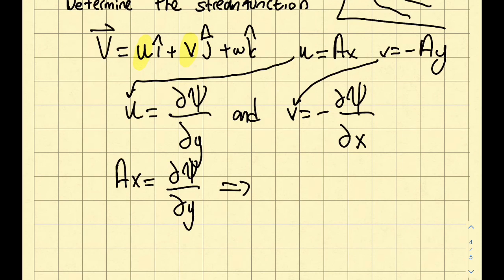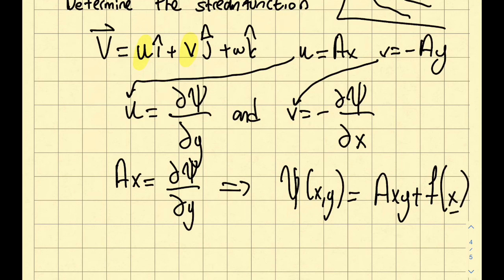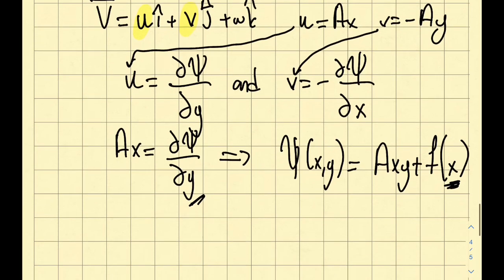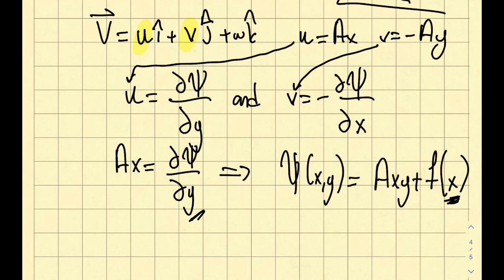And I got myself a stream function of X, Y. It's not a function of T, it's given in the question statement. It's equal to AXY plus, remember this is a partial, another derivative, so I'm going to get myself an F of X, right? I got myself X because I accounted for Y variance of the stream function in the relationship as well. So let's take a minute over here and take a look.